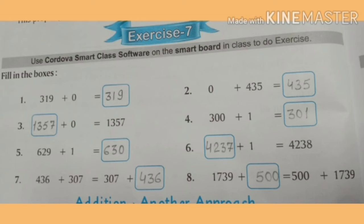And question number 7 — here is 436 plus 307 equals to 307 plus box blank. So बताइए, यहाँ आप क्या number लिखेंगे? देखिए, equal का sign लिखा हुआ है, and आपने 307 लिखा हुआ है। So what number is remained? कौन सा number रह गया है? So you write here 436. इसी के according आप यह boxes को carefully fill करेंगे।